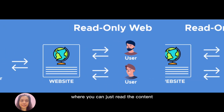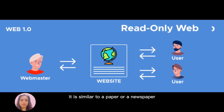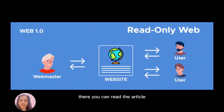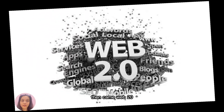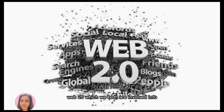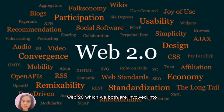Web 1.0 was a basic HTML website where you could just read content. It is similar to a paper or a newspaper — you can read the article and get information, that's it.